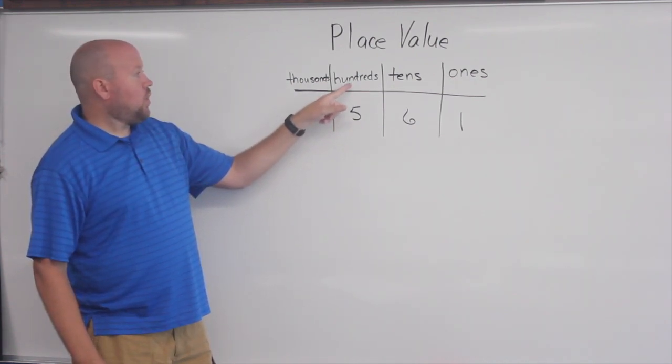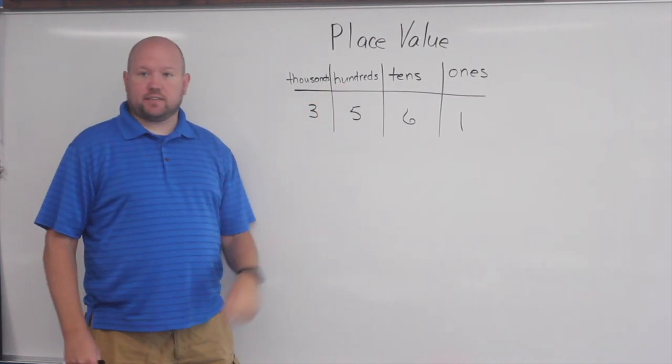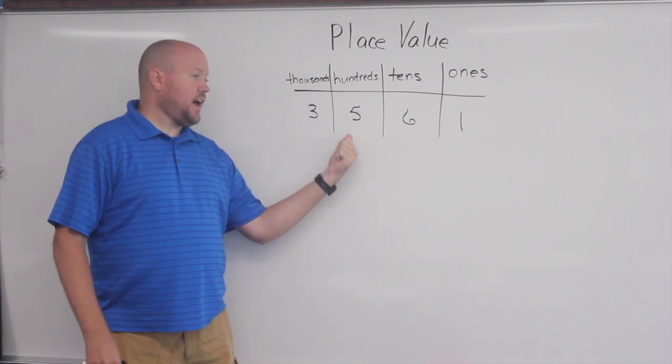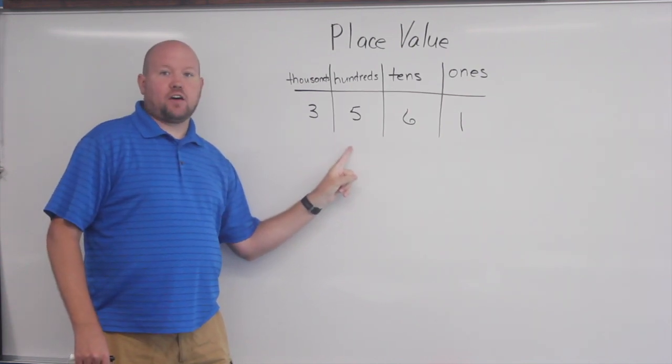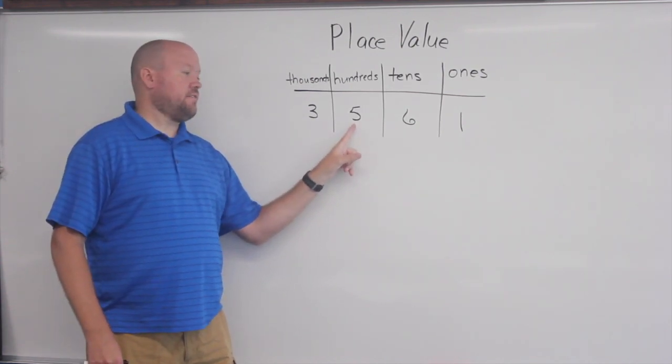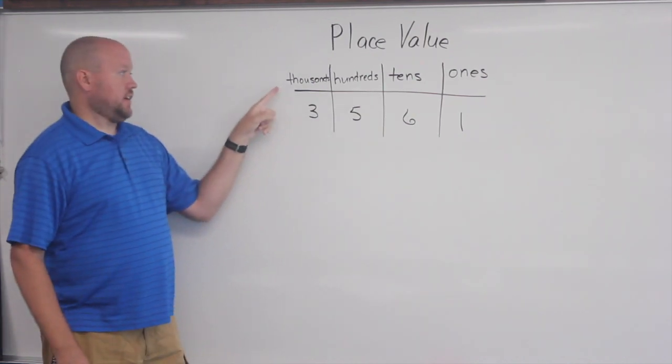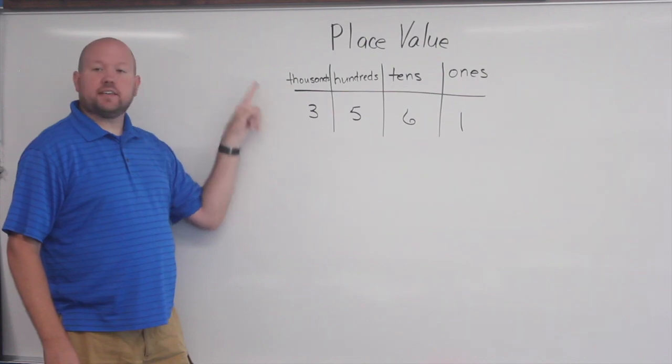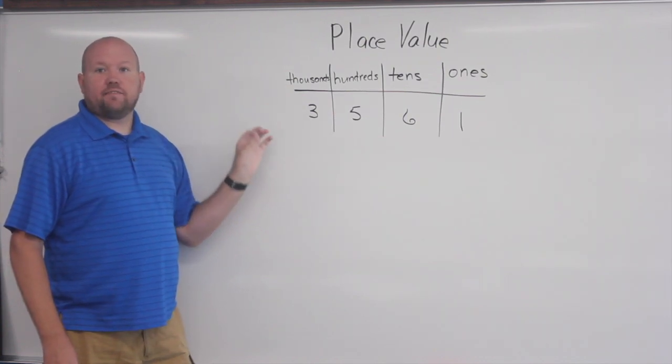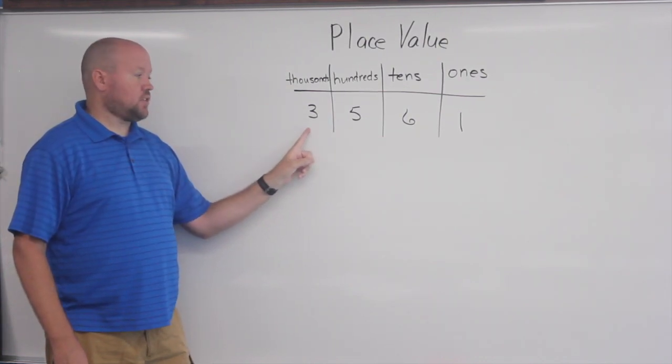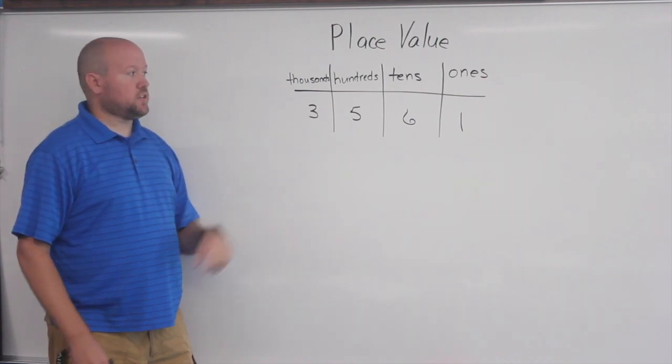Likewise, if you say what is in the hundreds place, they should be able to say that it's a five and they should be able to tell you the value of this number is 500 because of its place value. And lastly, they should be able to tell you that a three is in the thousands place and the value of that three is 3,000 because of where it's located.